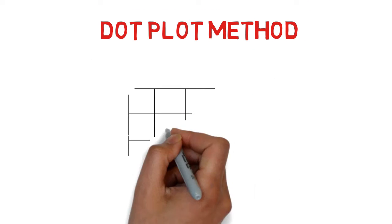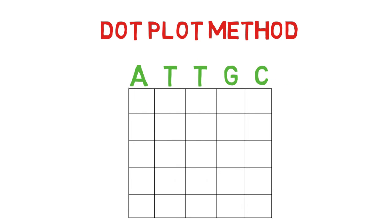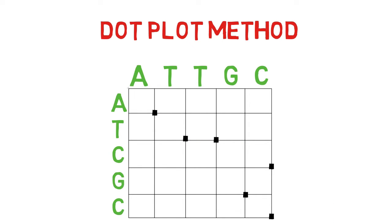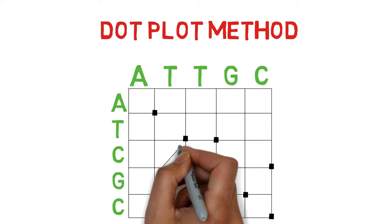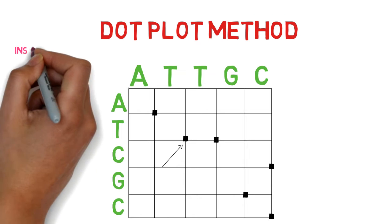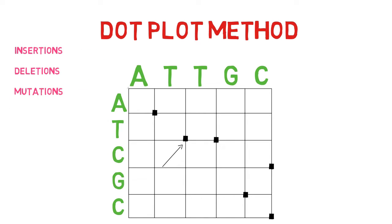We use a dot plot with one sequence written on top and the other written on the left to perform the sequence alignment. And a dot was added for each nucleotide that matched it. We are only able to locate matches in this matrix. We are unable to locate sequence insertion, deletion, or substitution.